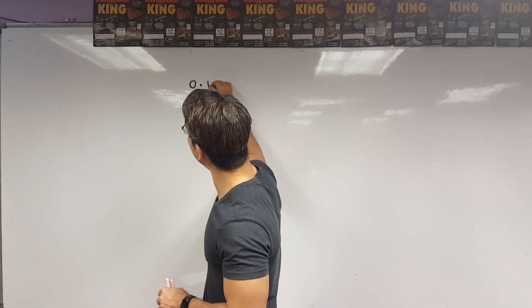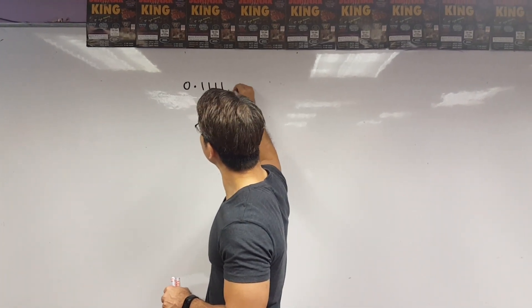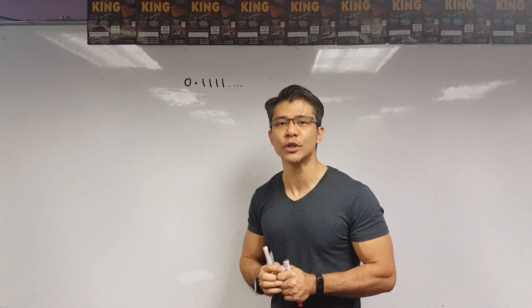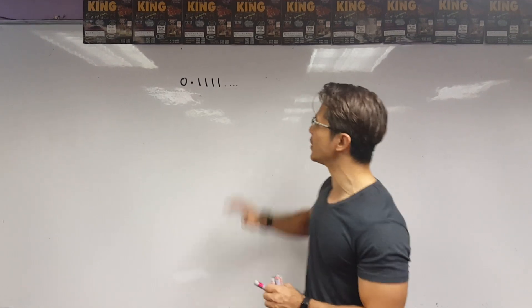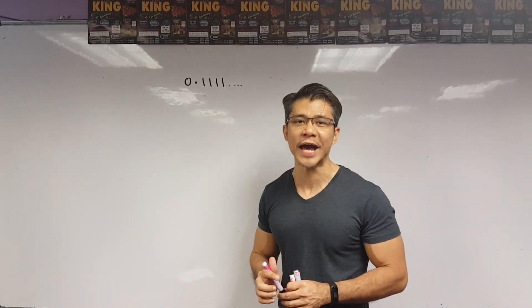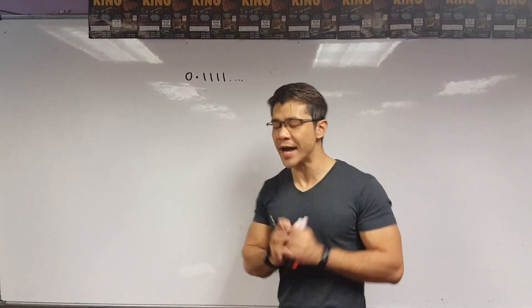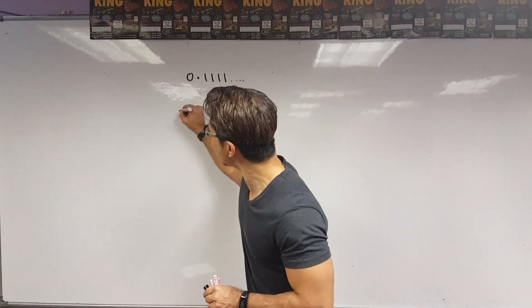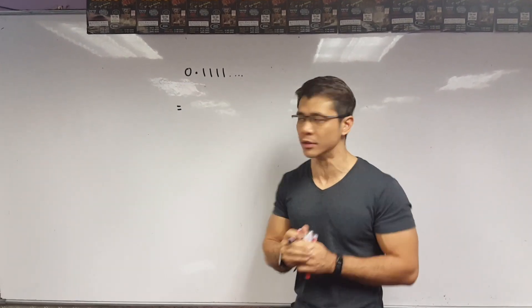0.1111. This is a recurring decimal, that means it's a continuous number. Now, what we're going to do is we are going to be using progression to convert this decimal number into a fraction. To do that, I need to separate the components of this decimal.